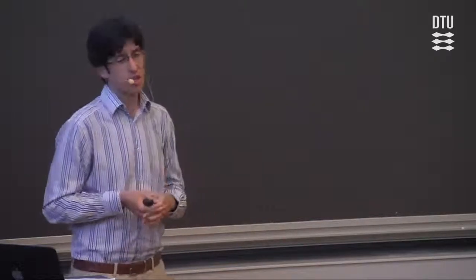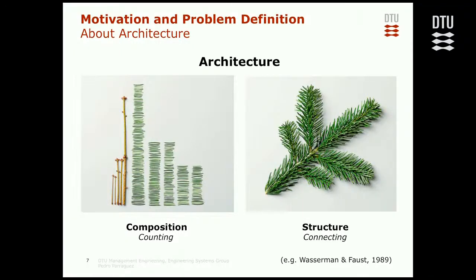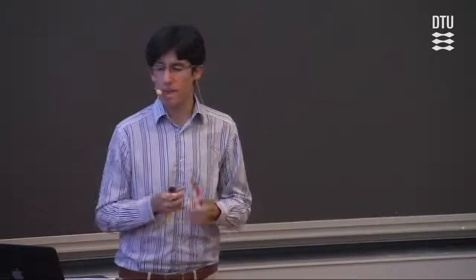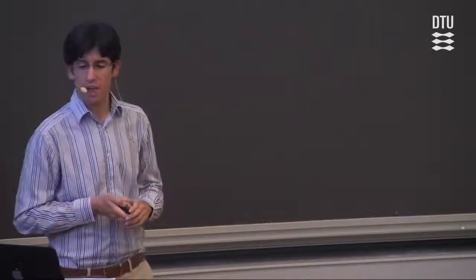Talking about architecture, I push the idea that architecture has two big and important parts. One is composition — the elements of the system, their attributes; we can count them and characterize them independently. But architecture also has a structure — we can see how the elements interact, how they become a whole, how things happen in terms of structure. It's only when we see both composition and structure that we can understand the system, going from counting to connecting and back.